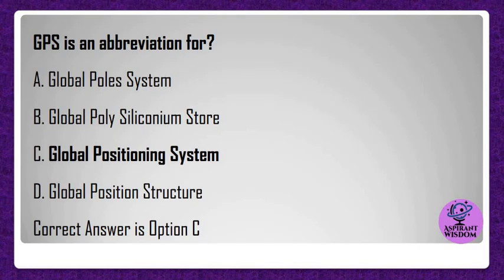GPS is an abbreviation for? A) Global Poles System, B) Global Polysilicon Store, C) Global Positioning System, D) Global Position Structure. Correct answer is option C.